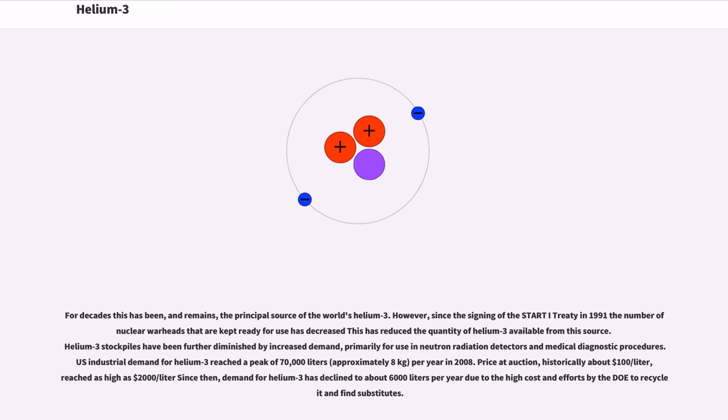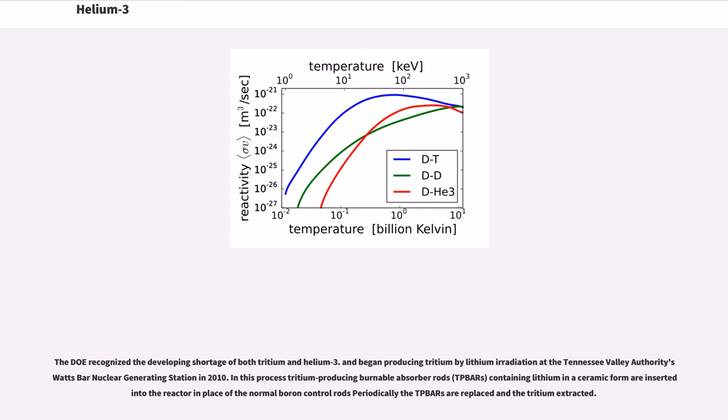For decades this has been, and remains, the principal source of the world's helium-3. However, since the signing of the START Treaty in 1991, the number of nuclear warheads that are kept ready for use has decreased. This has reduced the quantity of helium-3 available from this source. Helium-3 stockpiles have been further diminished by increased demand, primarily for use in neutron radiation detectors and medical diagnostic procedures. U.S. industrial demand for helium-3 reached a peak of 70,000 liters, approximately 8 kilograms, per year in 2008. Price at auction, historically about $100 per liter, reached as high as $2,000 per liter. Demand for helium-3 has declined to about 6,000 liters per year due to the high cost and efforts by the DOE to recycle and find substitutes.